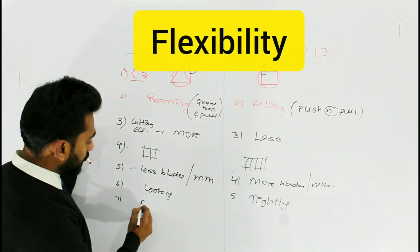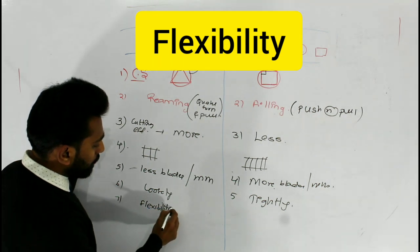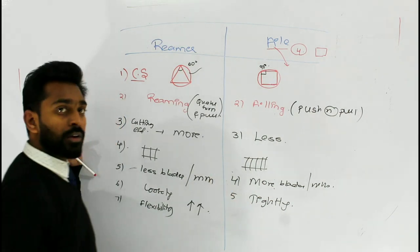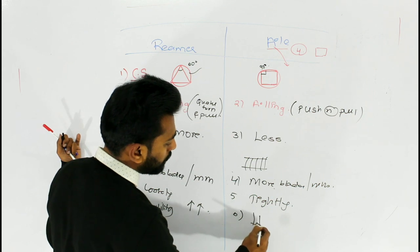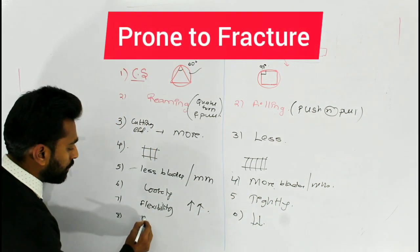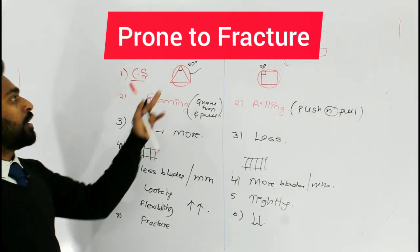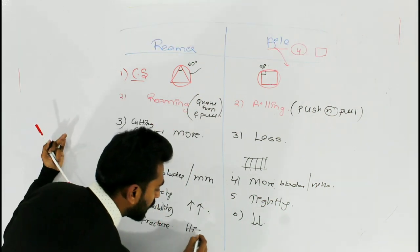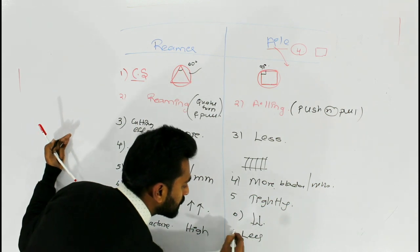Coming to the flexibility: reamers are more flexible when compared to the file, whereas files are less flexible when compared to reamers. Most importantly, regarding prone to fracture — among the reamer and file, a reamer has high chances of fracture, whereas a file has less chances of fracture.